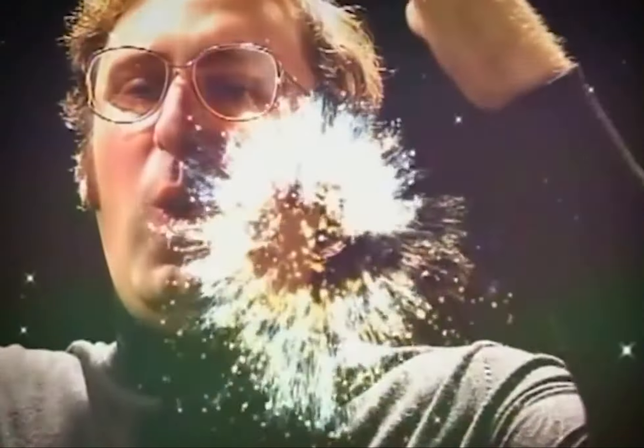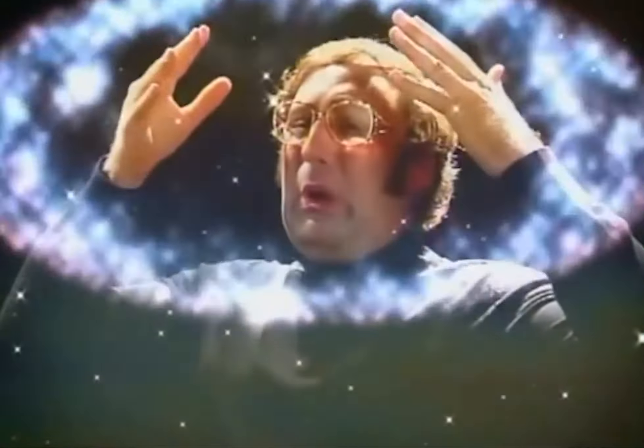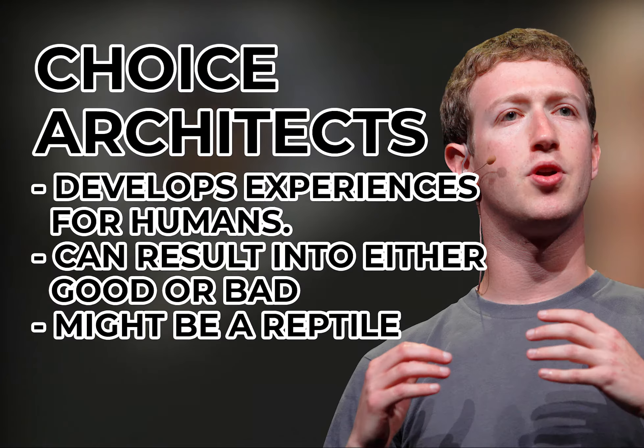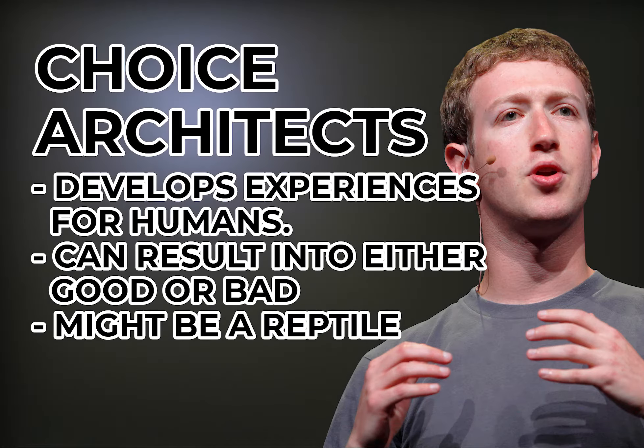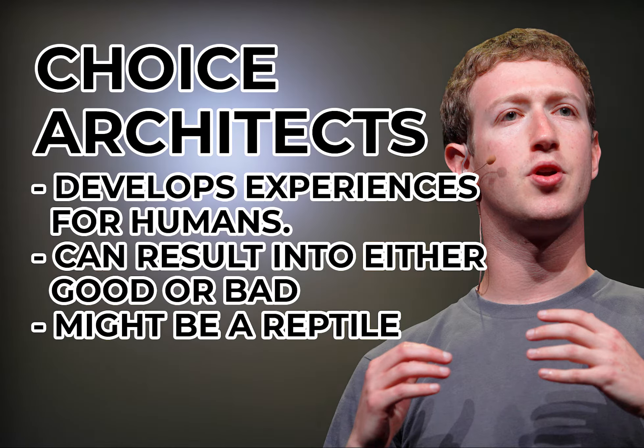Human beings think they are Econs. When making a decision, they think they are very rational, but more often than not, they neglect all the information and evidence and sometimes just go with the flow. And finally, the third type of person is the choice architect — these are the designers who either make life easier or harder for us humans.